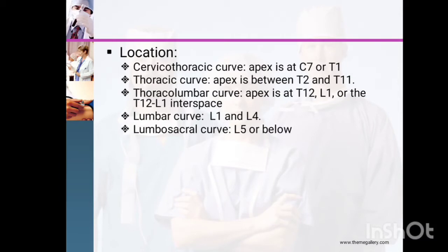Classification by location: the cervicothoracic curve has its apex at C7 or T1. The thoracolumbar curve has its apex at T12, L1, or the T12-L1 interspace. The lumbar curve apex is between L1 and L4. The lumbosacral curve apex is at L5 or below.